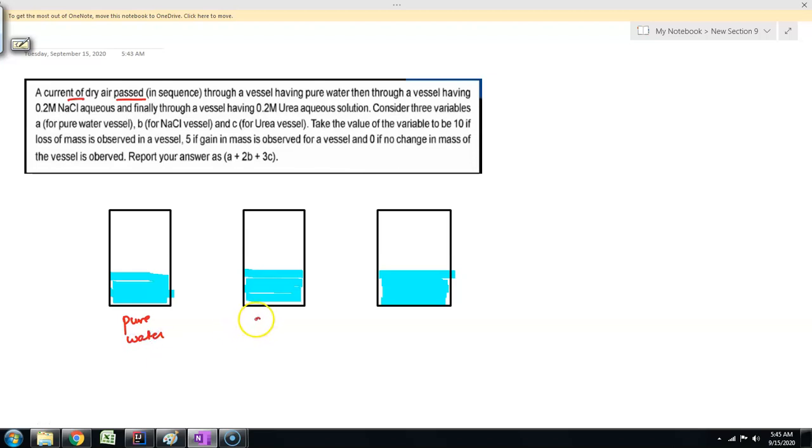The second is containing 0.2 molar NaCl. NaCl is an ionic solid, so it dissociates completely to give us Na plus plus Cl minus. So the Van't Hoff factor here will be 2.